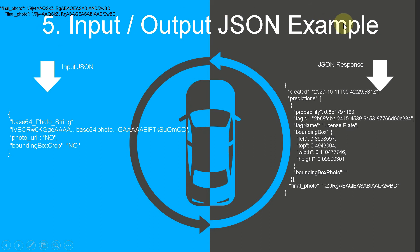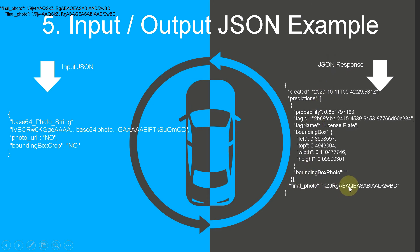Input and output JSON example: On the left side you have the input JSON with the photo as a base64 encoded string or a photo URL from the web, plus another field with a yes or no value depending on what you need. On the right side you have the response JSON string with multiple fields, including the final photo field as a base64 encoded string where the license plates are blurred.